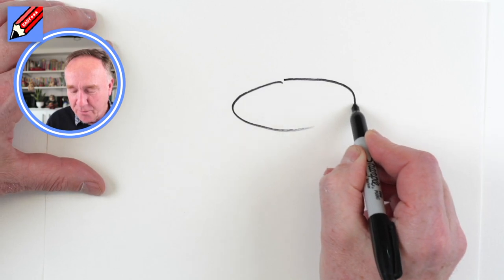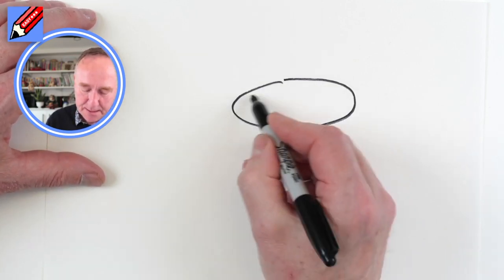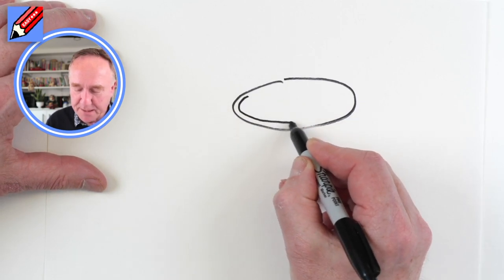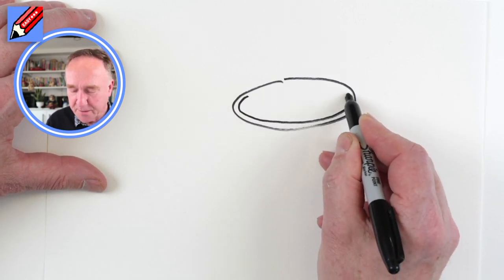Draw an oval like that. And we're going to want to make it have a bit of thickness. So we're going to draw that curve like that.